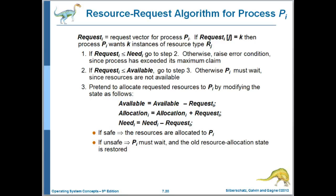When a request comes in, we simulate making the request: subtract the request vector from available, temporarily update available, allocate those resources to that process, update need, and then run the safety algorithm. If the result of the safety algorithm is that we're in a safe state, then the request is permitted and the resources are allocated. If the safety algorithm says we're not in a safe state, the request is denied and we restore everything to the way it was before the request was made.